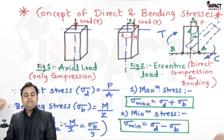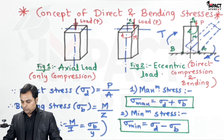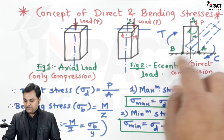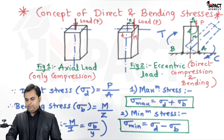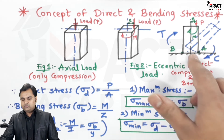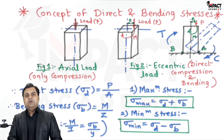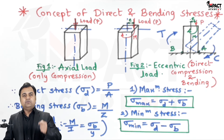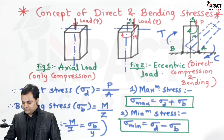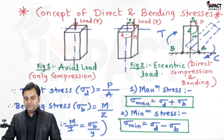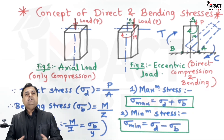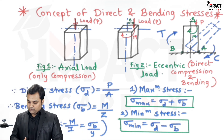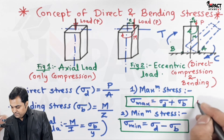Whenever a column is designed, it is desired that tension should not be allowed in the section at the base. Compression is feasible inside the column because it won't result in the column lifting from its foundation, but tension is not required. This means the sigma_min value should never be negative, because in this topic of direct and bending stresses, compressive stresses are taken as positive whereas tensile stresses are taken as negative. The unit of stress is Newton per mm squared.